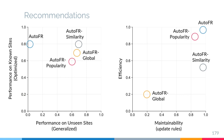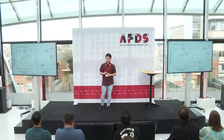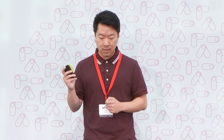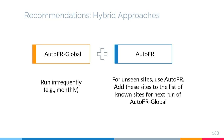Here are some recommendations. If we only care about known sites, use AutoFR. If we care about performance on both known and unseen sites, use AutoFR Similarity and AutoFR Global. If we care about efficiency and maintainability, use AutoFR and AutoFR Popularity. There are also opportunities for hybrid approaches: since AutoFR Global performs well on both known and unseen sites but is slow, just run it infrequently — for example monthly — and in the meantime use AutoFR to generate per-site rules, adding unseen sites to the known list for the next AutoFR Global run.